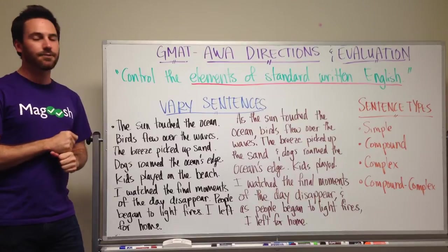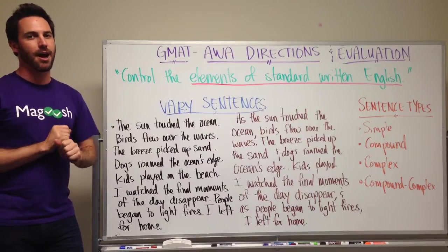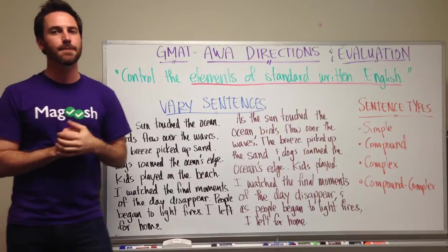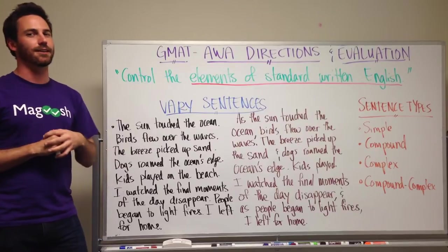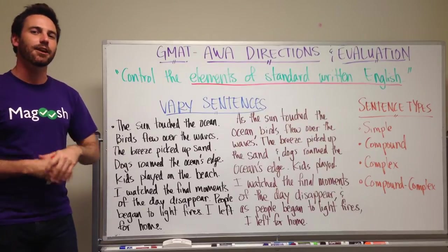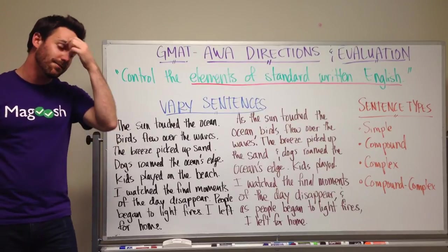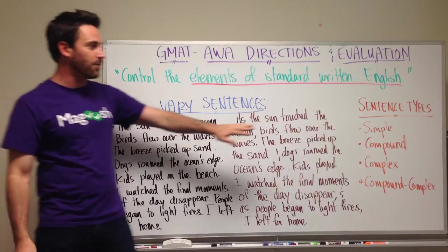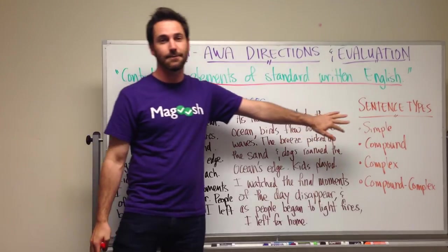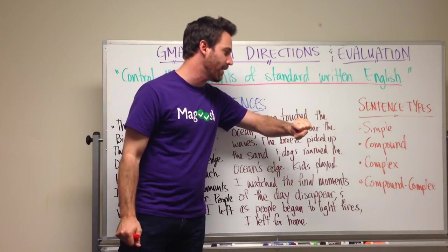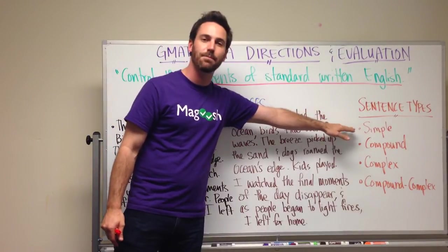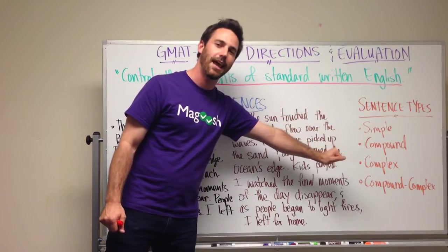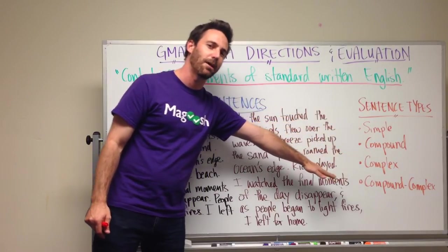And specifically, I want to talk about varying your sentences. One aspect of good written English is having a variety of different types of sentences. On this side of the board, you can see the four sentence types that we have in English: simple, compound, complex, and compound-complex.